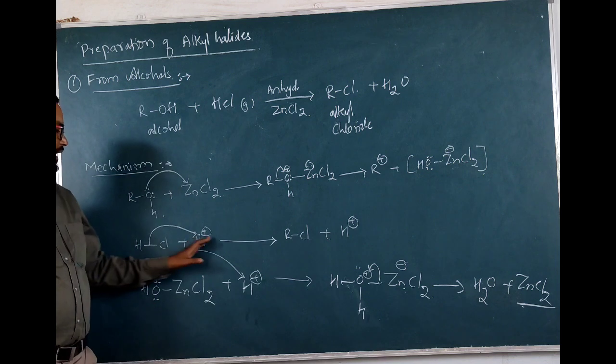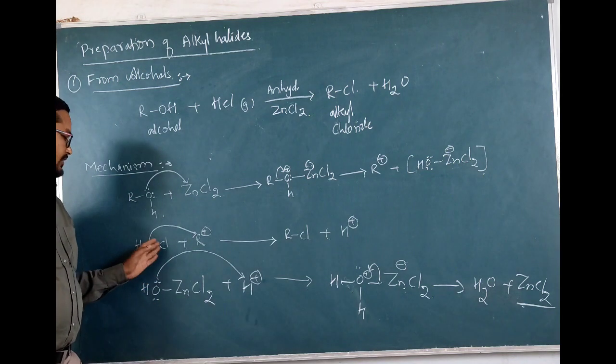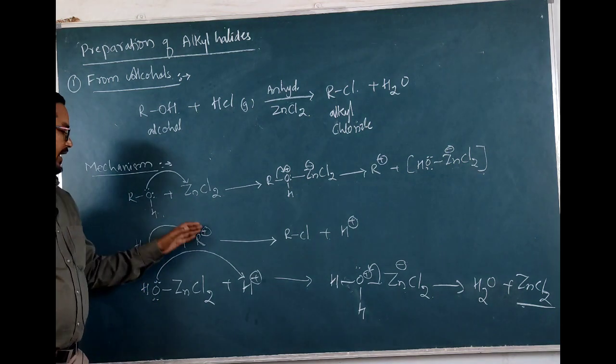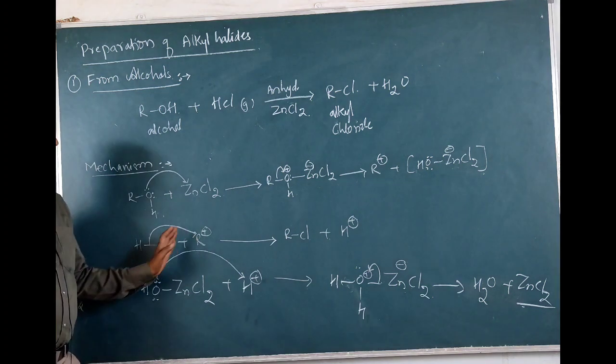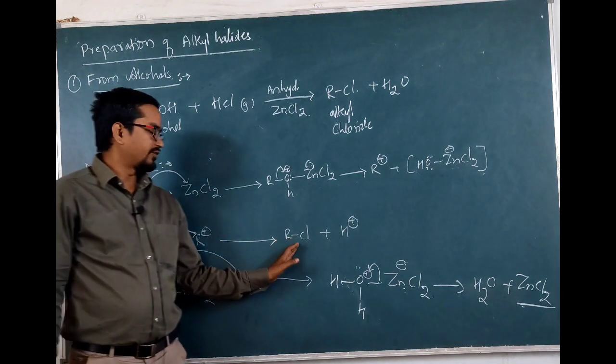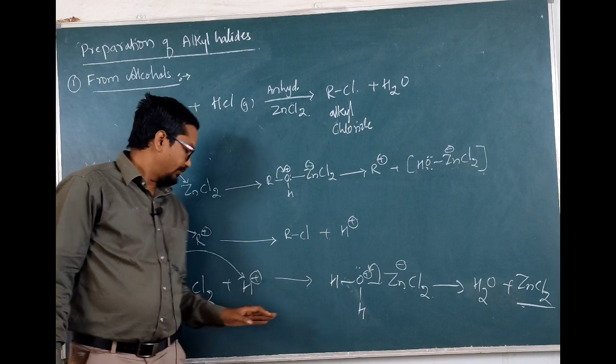Oxygen tries to reduce the positive charge by gaining this electron, and it forms the alkyl carbonium ion as an intermediate. Now we have HCl and the alkyl carbonium ion, so Cl⁻ will attack the alkyl carbonium ion to lead to the formation of alkyl chloride and a proton.